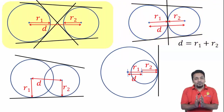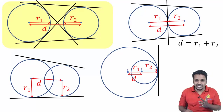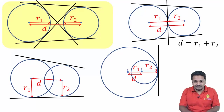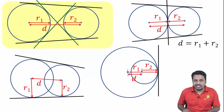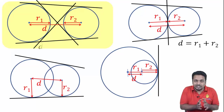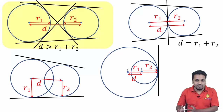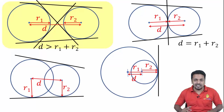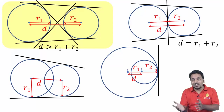There can be four common tangents as in the first case shown in the figure, when the circles are not touching each other: two direct common tangents and two transverse common tangents. The condition for four tangents is that D should be greater than r1 plus r2. When D was equal to r1 plus r2, circles touched each other externally. When D is greater than r1 plus r2, circles will be away from each other.